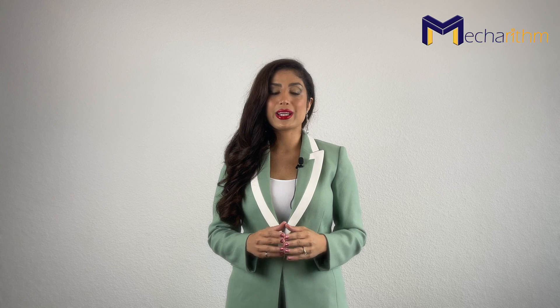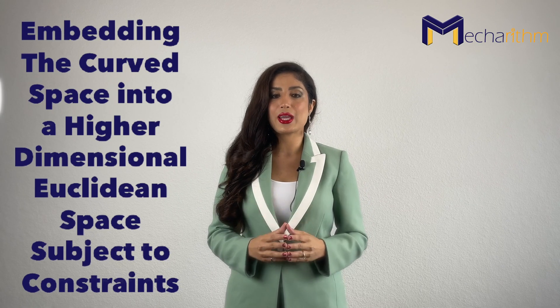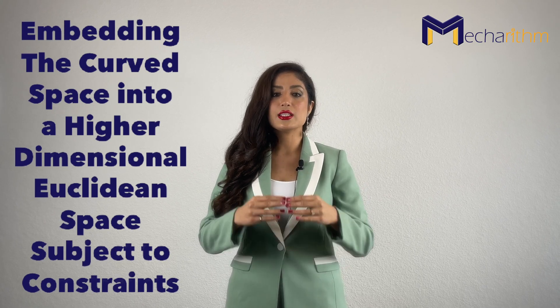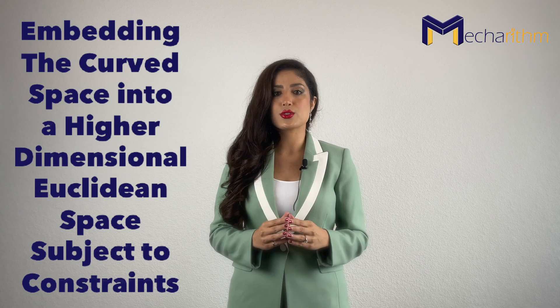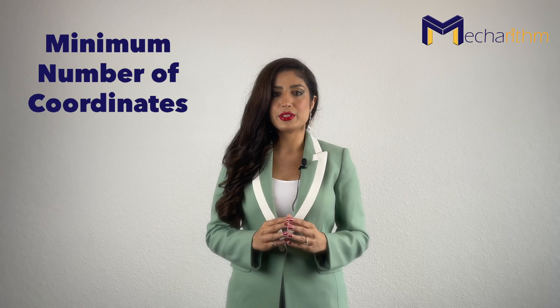Implicit representation is when we want to represent the configuration by embedding the curved space of configurations into a higher dimensional Euclidean space subject to constraints. An explicit representation is when we want to express the configuration with minimum number of parameters.